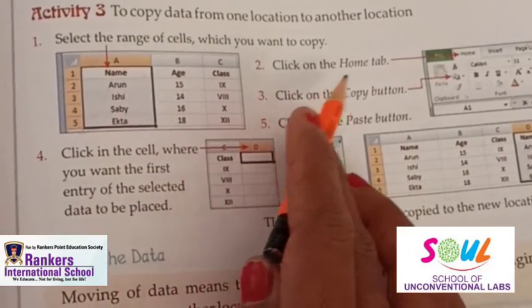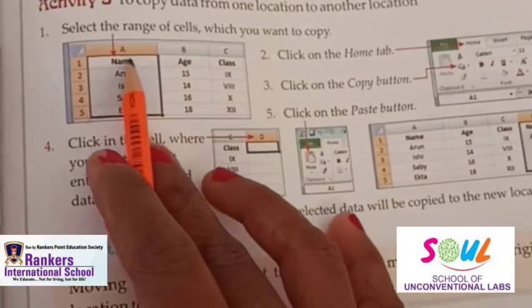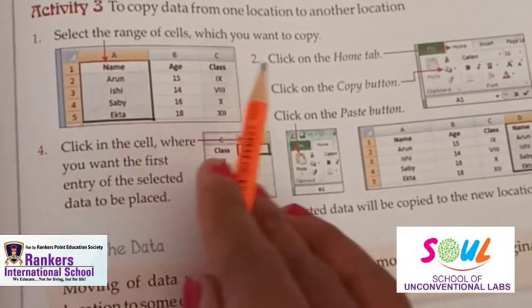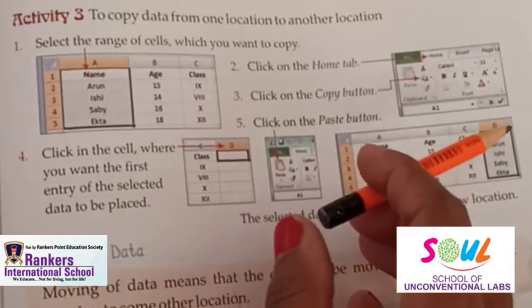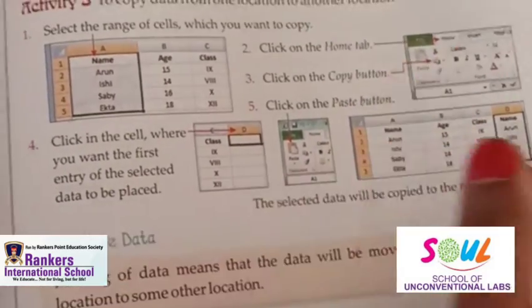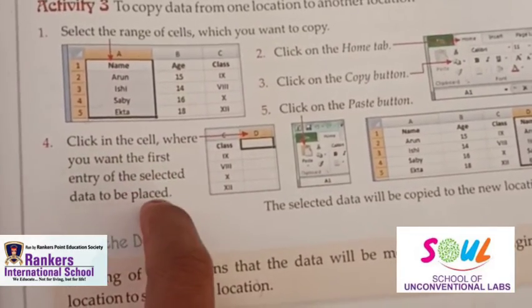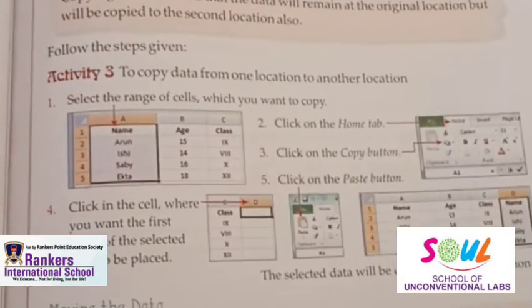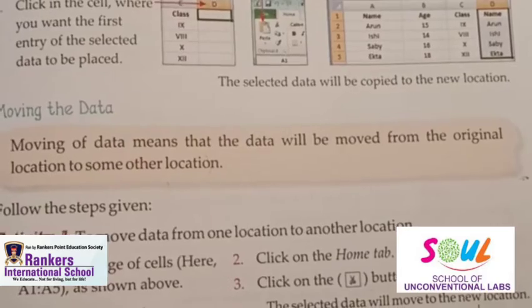To copy data: select the range of cells you want to copy, click on the Home tab, click on the Copy button, then select the destination cell where the data is to be placed, and click the Paste button.